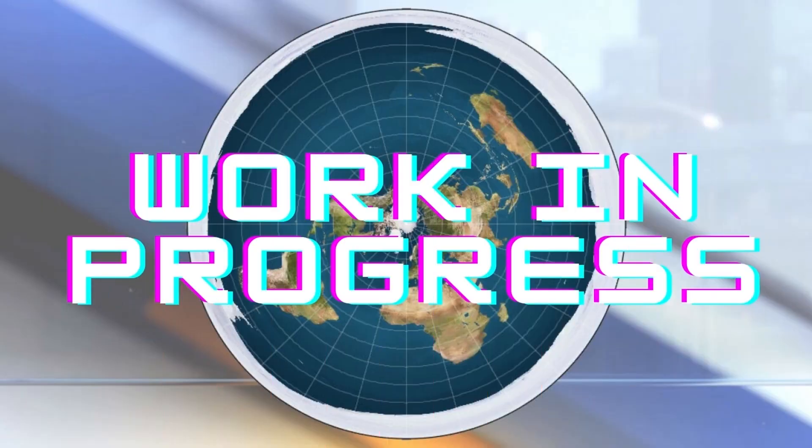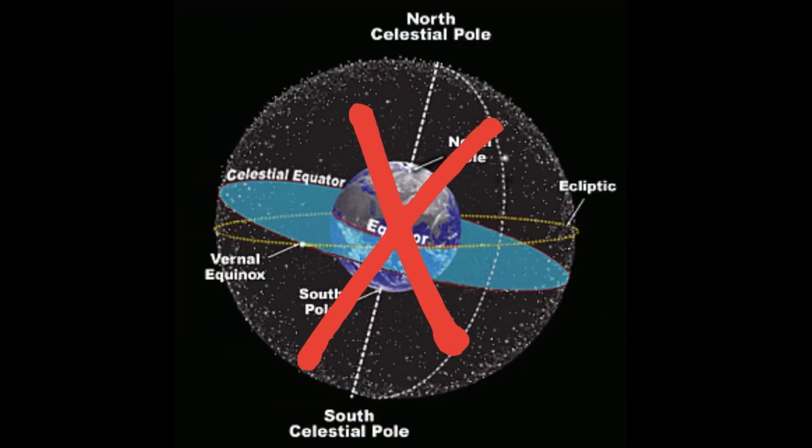We also cannot show an example of how celestial navigation works, because there doesn't exist any flat earth world map. Oh no, what do we do?